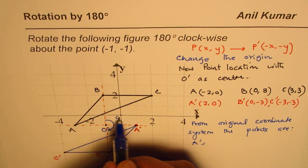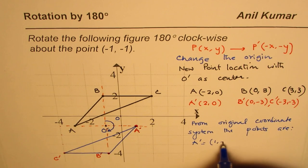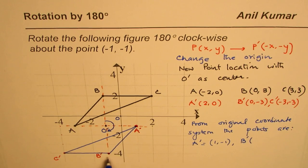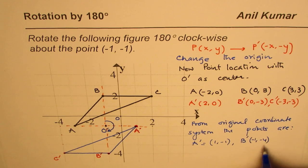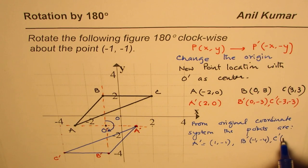in the original coordinate system (1, -1). B' is (-1, -4), and C' is (-4, -4).